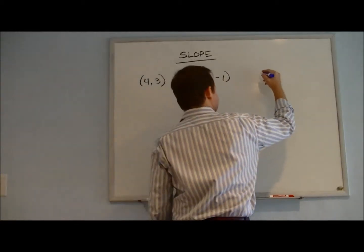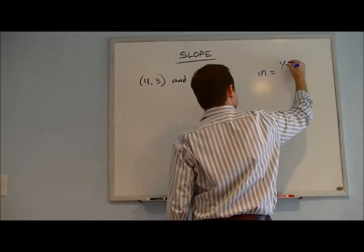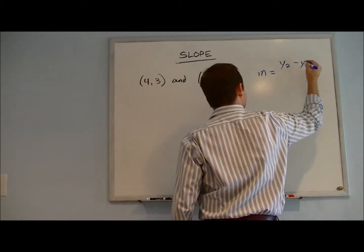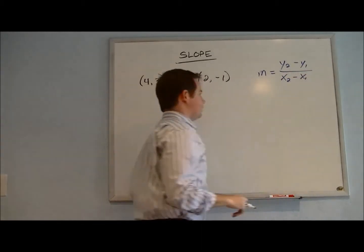So the variable that is used for slope when you have slope intercept form is m, and the way that we calculate slope is y2 minus y1 over x2 minus x1.